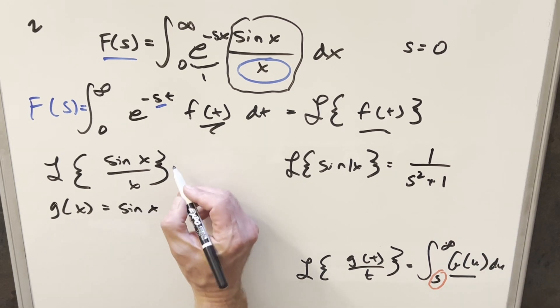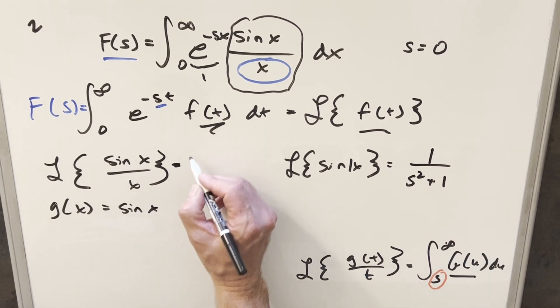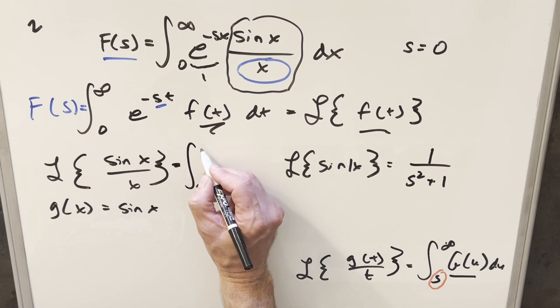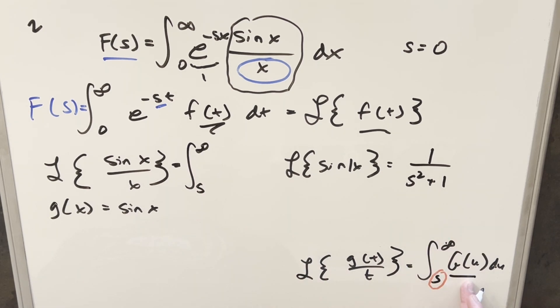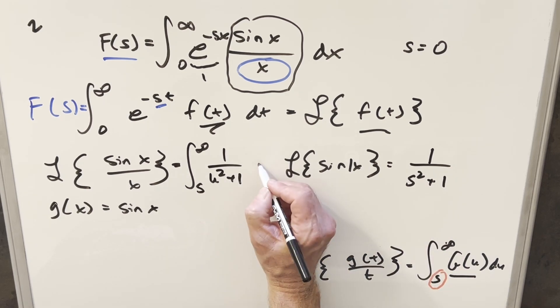So then coming back here to our problem, using this, this is going to be an integral from s to infinity, our big g of u. So we're going to use this, but now we need the variable to be u, not s. So what I'll do is write this as 1 over u squared plus 1 du.